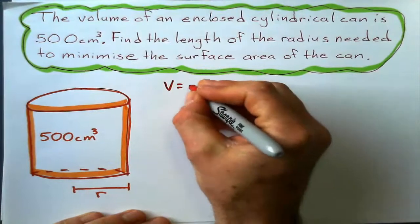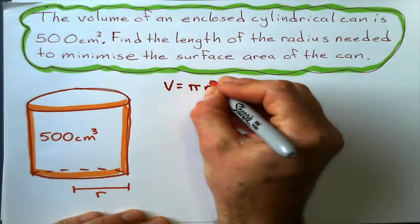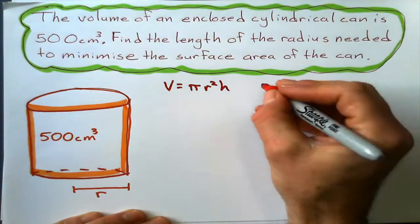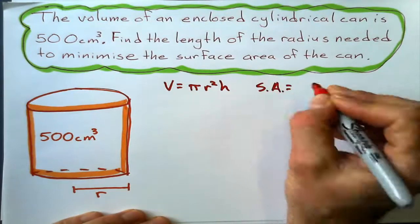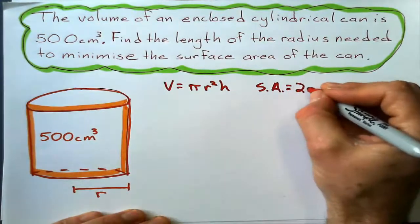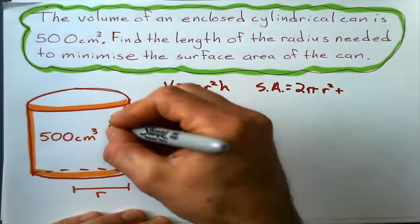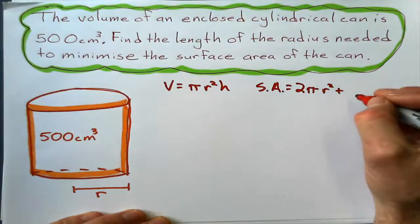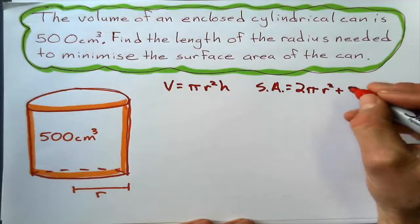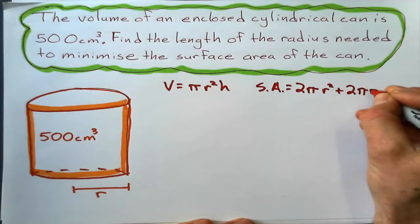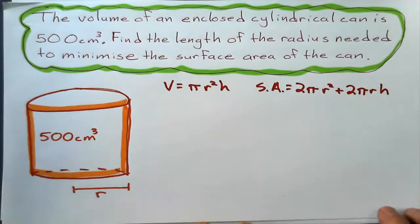We need two things. Volume of the cylinder is pi times radius squared times height. And the surface area is the area of the two circles, 2 pi r squared, plus the curved part of the cylinder, which is the circumference times the height, 2 pi r times h.